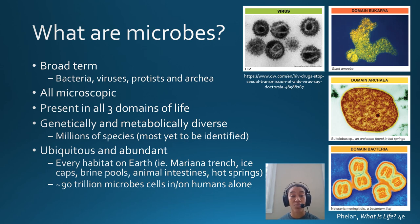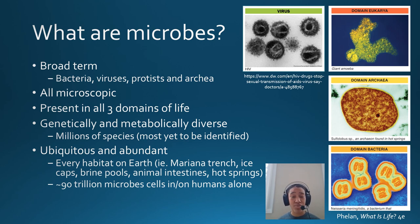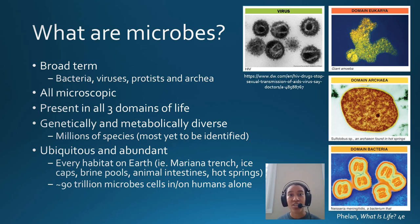Those hostile conditions still support thriving organisms. Same thing with the ice caps where it's super cold, brine pools where the environment is really salty and would generally dry out cells, and hot springs where you'd imagine nothing can live. And your intestines — your microbiome, which we've learned a lot about in recent years — contains tons of organisms that live inside and on you. You're actually more them than you if you go by numbers of cells. These organisms are far more hardy than we are.